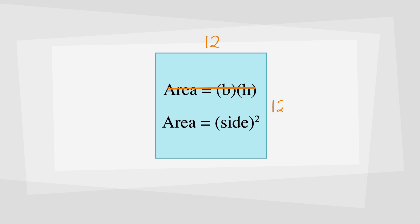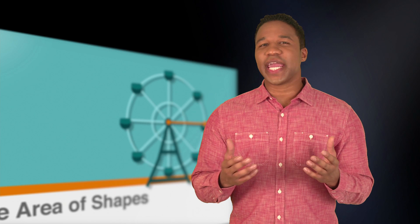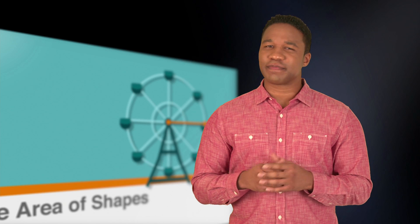Looking at this example, the side length is 12. Plug that into our formula and we get 12 squared, which is 144. As you can see, finding the area of four-sided parallelograms is pretty straightforward.